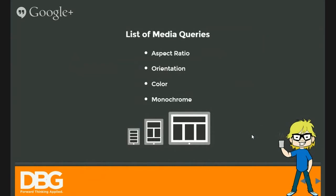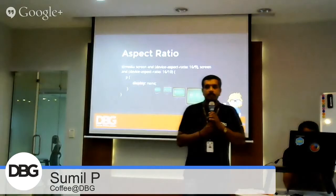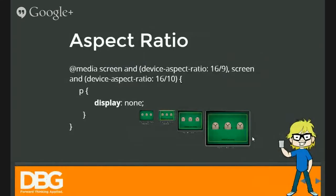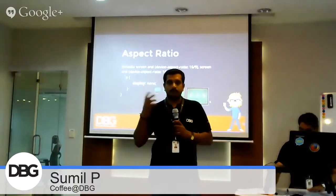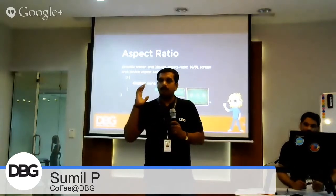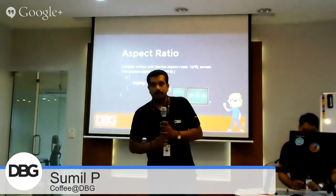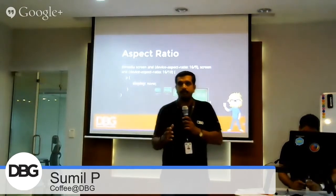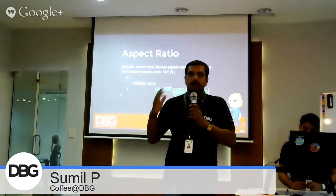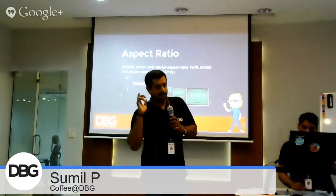Aspect ratio, orientation, color, monochrome. First — aspect ratio. With this media query, we will be able to query the device's aspect ratio. Since the birth of smartphones and tablets, older displays commonly have aspect ratios of 4:3 and 5:3. But now, with the new HD video standards, we see displays at 16:9 and 16:10.